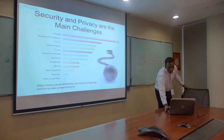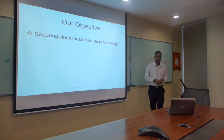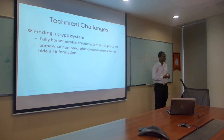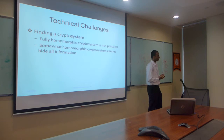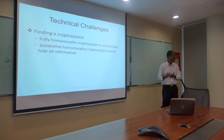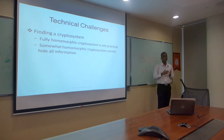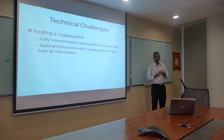Security and privacy are the main issues in both these schemes, and our objective is securing cloud-based image processing. It's not easy. For securing cloud-based image processing, we need a system that does homomorphic encryption. Homomorphic encryption means that if we encrypt the data or image, store it, and perform certain operations, those operations must be supported. But fully homomorphic cryptosystems are not practical in the current scenario, and somewhat homomorphic cryptosystems cannot support all image processing algorithms. This is the challenge.